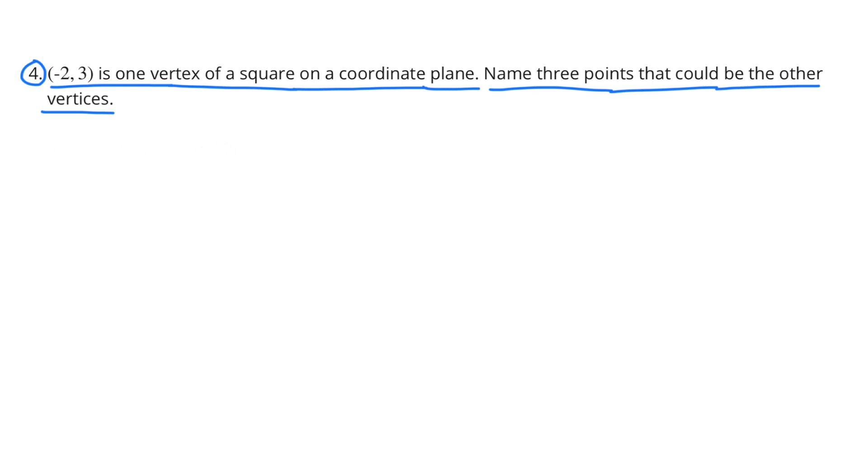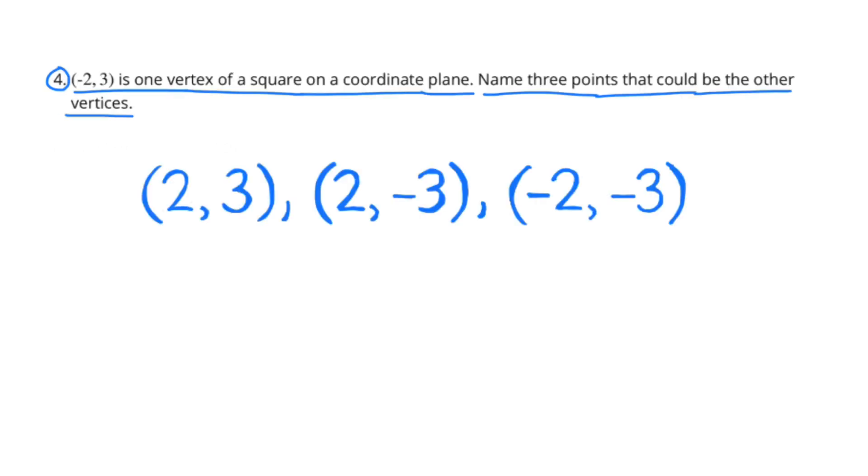Number 4. (-2, 3) is one vertex of a square on a coordinate plane. Name three points that could be the other vertices. Three points that could be other vertices on this particular square could be (2, 3), (2, -3), and (-2, -3).